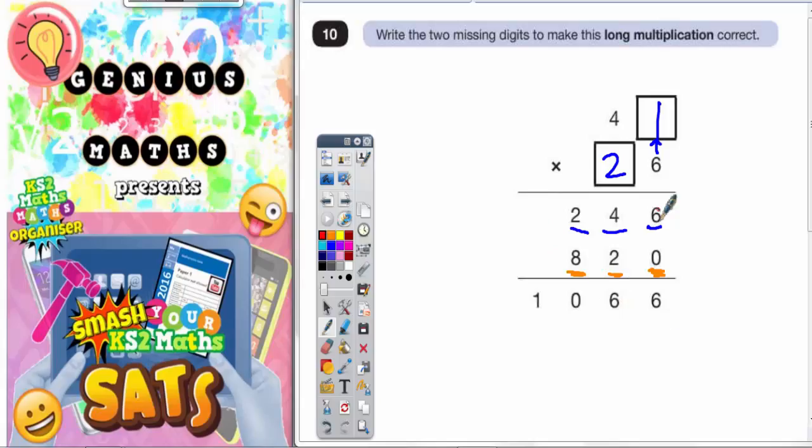And just to double check, since 6 add nothing is 6, 4 add 2 is 6, 2 add 8 is 10. So everything checks out, so the 2 missing digits are the 1 at the top there and the 2 there. And that's the end of that question.